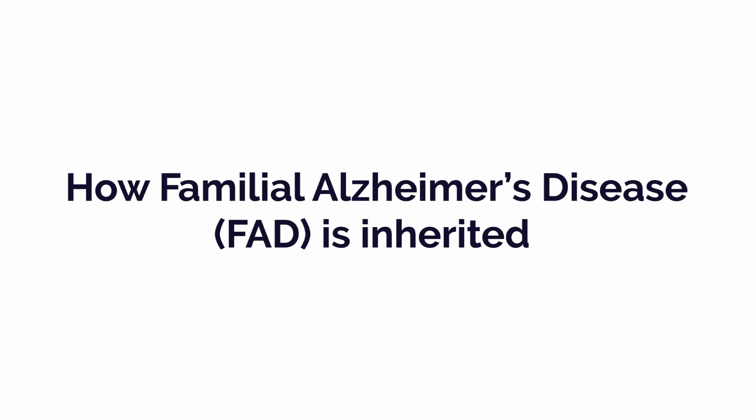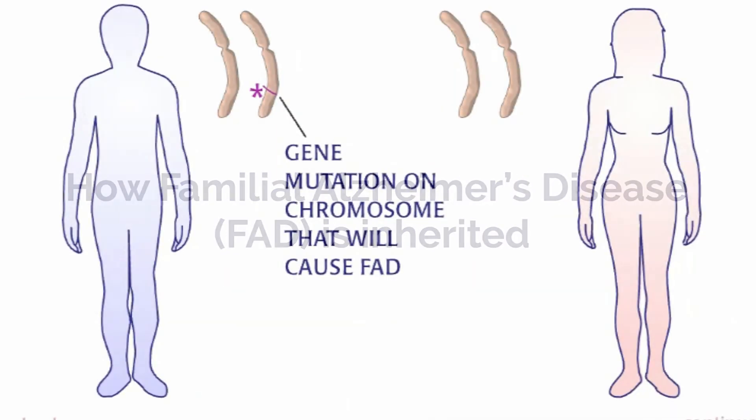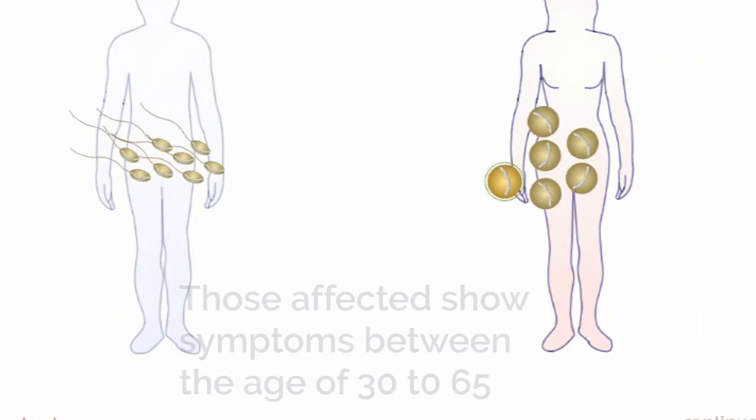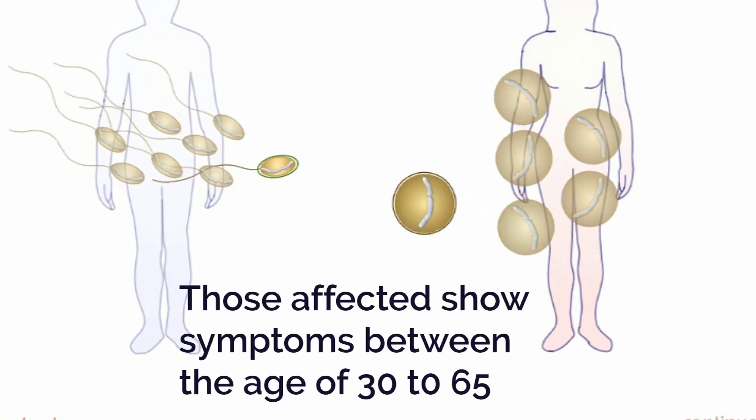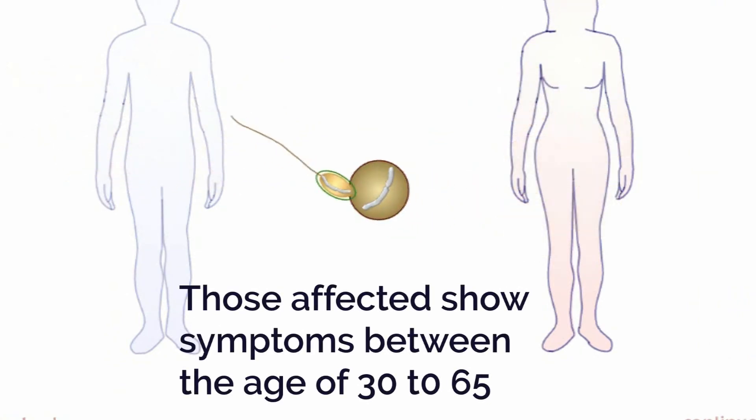Familial Alzheimer's disease, also called FAD, is rare, accounting for less than 10 percent of all cases. This form of AD is also referred to as early onset AD because those affected show symptoms between the age of 30 and 65.